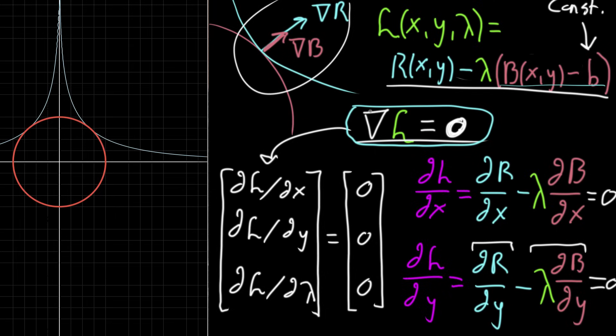With that, I'll see you in the next video, where I'm going to talk about the significance of this lambda term — how it's not just a ghost variable, but actually has a pretty nice interpretation for a given constraint problem.